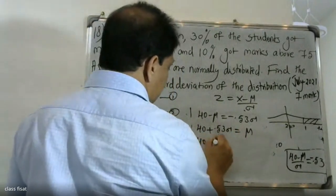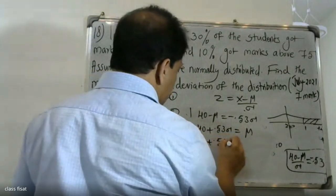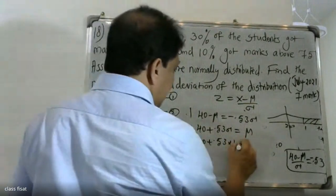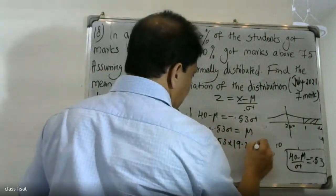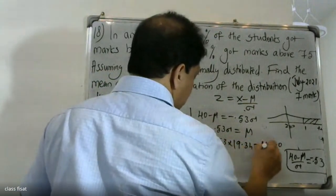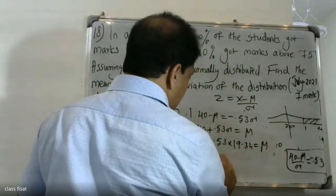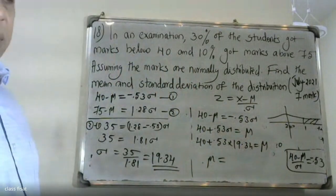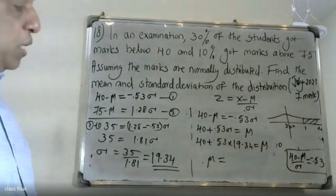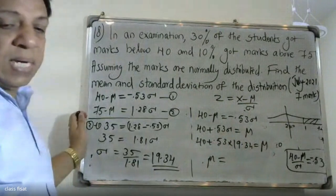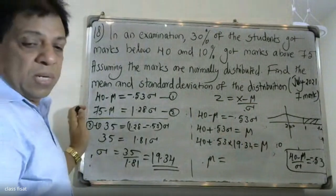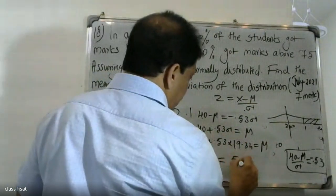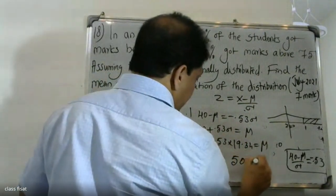So the mean equals 40 plus 0.53 times 19.34. Calculating: 40 plus 10.25 equals 50.25. So the mean is approximately 50.25.